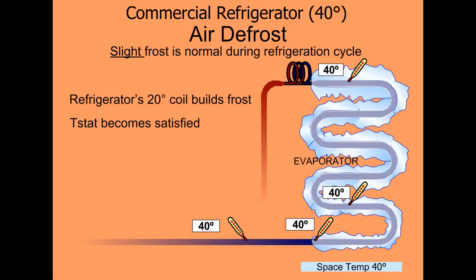When the compressor is off, it circulates the box temperature, which is above freezing, over that coil. And that does melt the frost and whatever ice may build up on the coil during the refrigeration process.